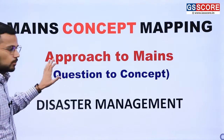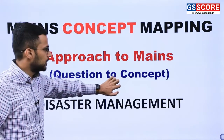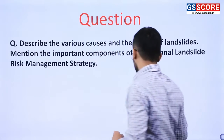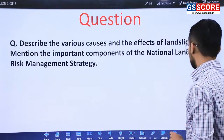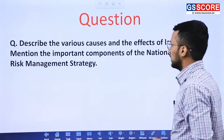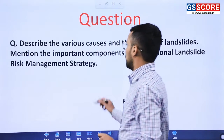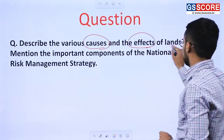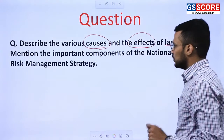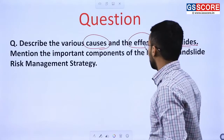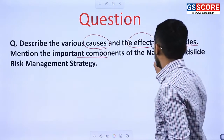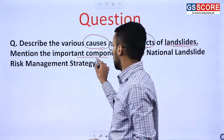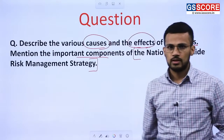In order to discuss this approach to Mains, we will be discussing a question from the 2021 Mains examination. That question is: describe the various causes and effects of landslides. Mention the important components of the National Landslide Risk Management Strategy.